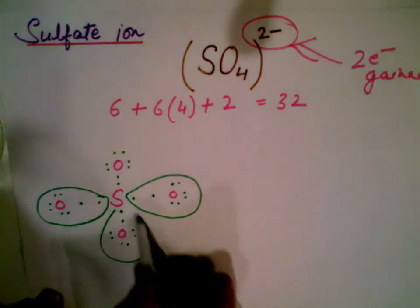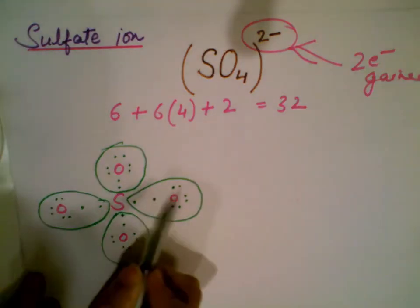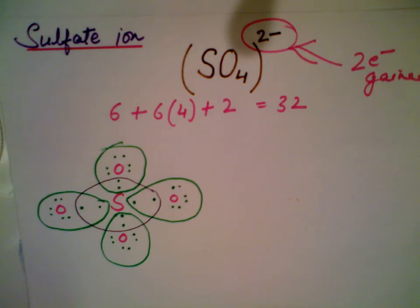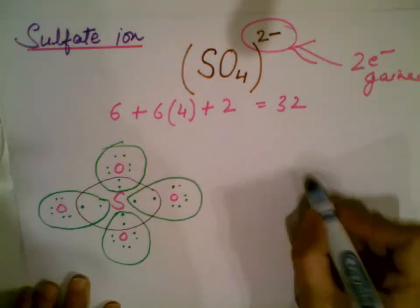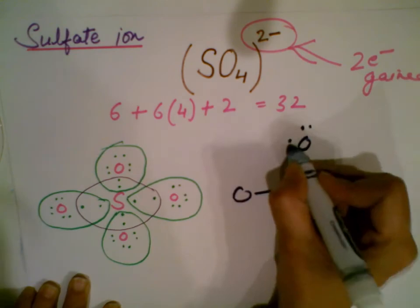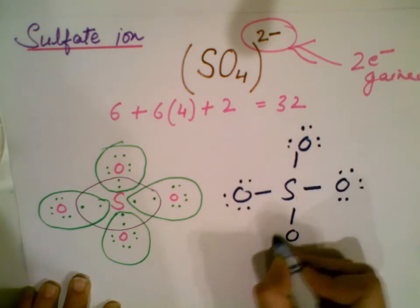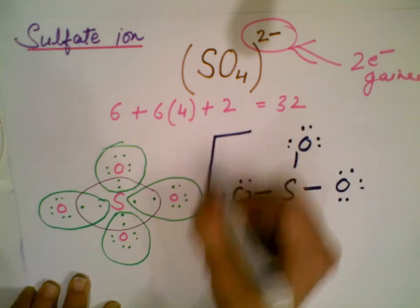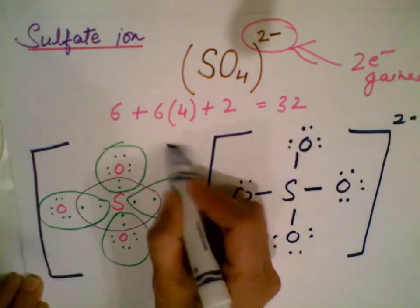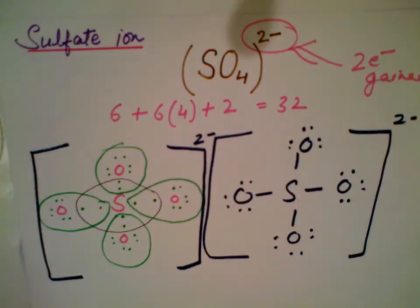Each atom ends up with eight electrons. Connecting the dots gives four single bonds — one, two, three, four. The unshared lone pairs on each oxygen must always be shown; they are not used for bonding. Don't forget to show the negative two charge outside the bracket. The Lewis dot structure for sulfate is complete.